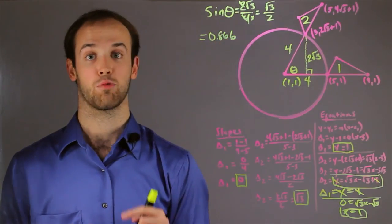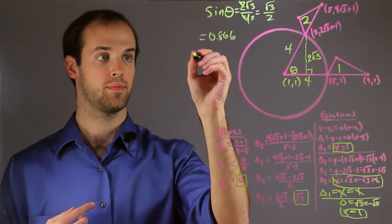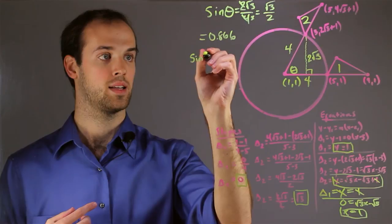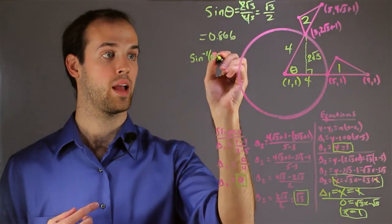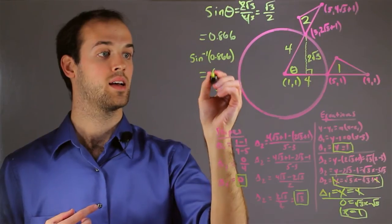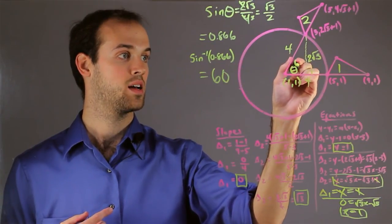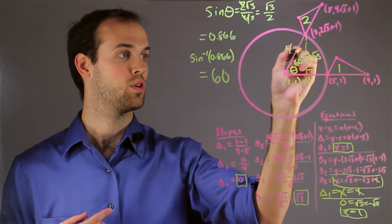And from there, I'm going to turn right back around and plug that number into an inverse sine function, sine negative 1 of 0.866, which will give me 60 degrees. So I know that theta must equal 60 degrees.